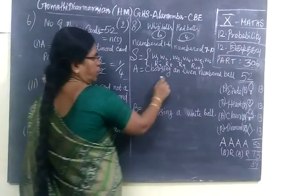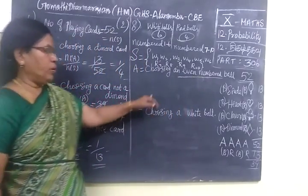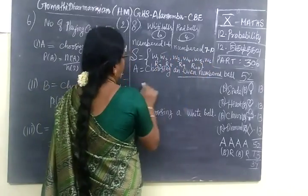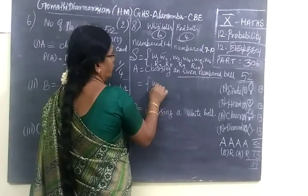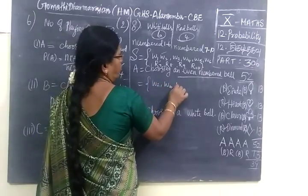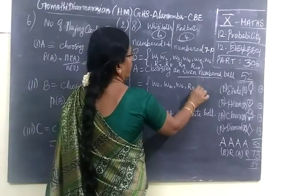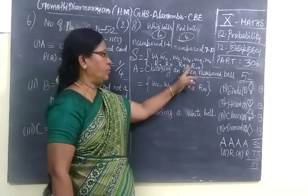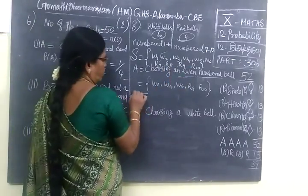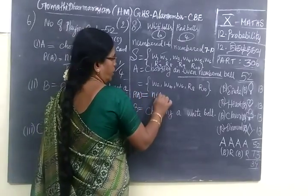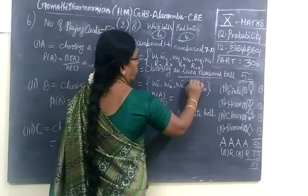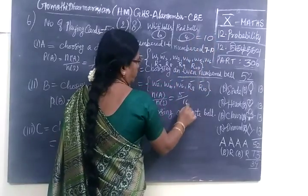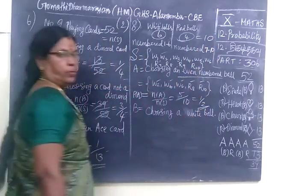Now choosing an even-numbered card. We are selecting a card which is an even number. Even numbers from our set are: W2, W4, W6, 8, and 10. Totally 5 even-numbered cards. So P of A equals N of A by N of S — 5 by total number of cards which is 10. If you cancel you get 1 by 2.